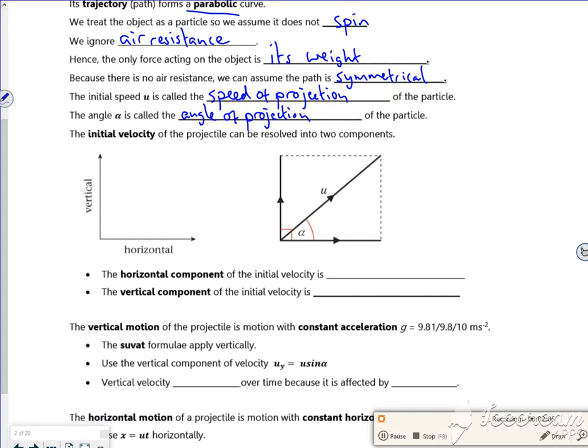So the initial velocity, because it's a vector, can be resolved in two dimensions. If you imagine this vector here, this one's opposite, so using a little triangle. If that's u and that's there, sine of alpha is the opposite over the hypotenuse which is u. So that would mean that u sine alpha is whatever opposite the angle. So this component would be u sine alpha.